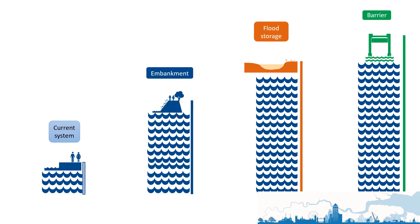In this example, the current system protects us against a modest increase in sea level. Beyond that, there are three options for flood defences that we could build. A flood embankment, a tidal flood storage area and a tidal barrier.